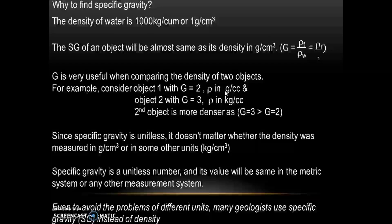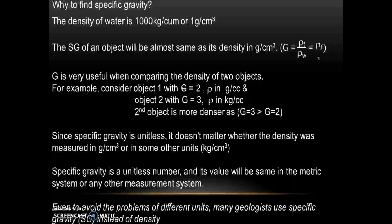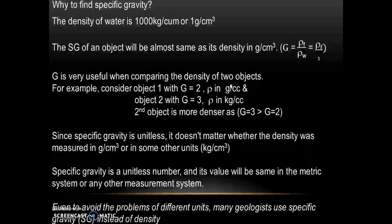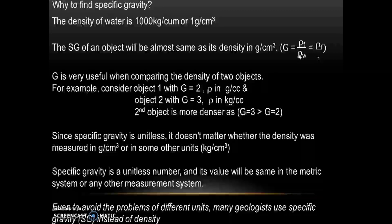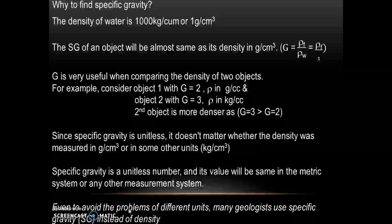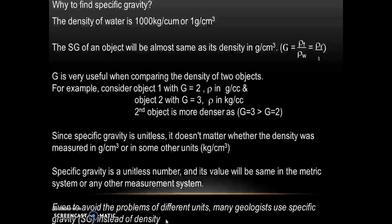Even though the unit of density for the first object is in gram per cc and for the second is in kg per cc, we can conclude which is more dense just based on the value of specific gravity, since g has no units. Since specific gravity is unit-less, it doesn't matter whether density was measured in gram per cc or in kg per cc. Specific gravity is a unit-less number as it is a ratio of density to density. Its value will be the same in the metric system or any other measuring system. To avoid problems with different units, many geologists use specific gravity instead of density.